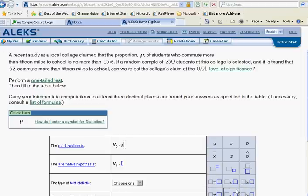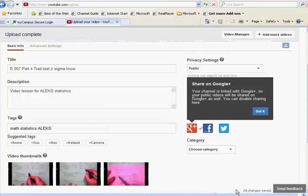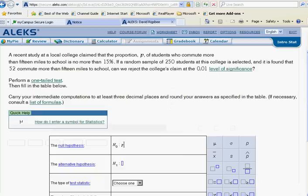Okay, it's the next to last section of ALEKS statistics. We'll be looking at a traditional test for the population proportion. A recent study at a local college claimed that the proportion p of students who commute more than 15 miles to school is no more than 15%.